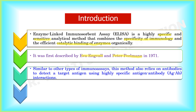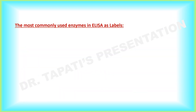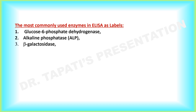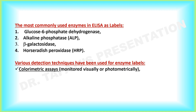Similar to other types of immunoassays, this method also relies on antibodies to detect a target antigen using highly specific antigen-antibody interactions. It uses the catalytic properties of enzymes to detect as well as to quantify immunologic reactions. The most commonly used enzyme labels are glucose 6-phosphate dehydrogenase, alkaline phosphatase, beta-galactosidase, and horseradish peroxidase. Various detection systems have been used for enzyme labels including colorimetric assays,